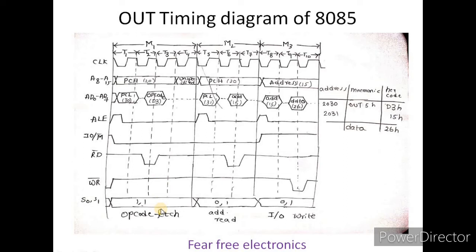After the first machine cycle, the second machine cycle begins. The program counter is incremented to 2031. The address 2031 is transferred via ALE, and the data 15h is transferred to the data bus. This completes the second machine cycle.